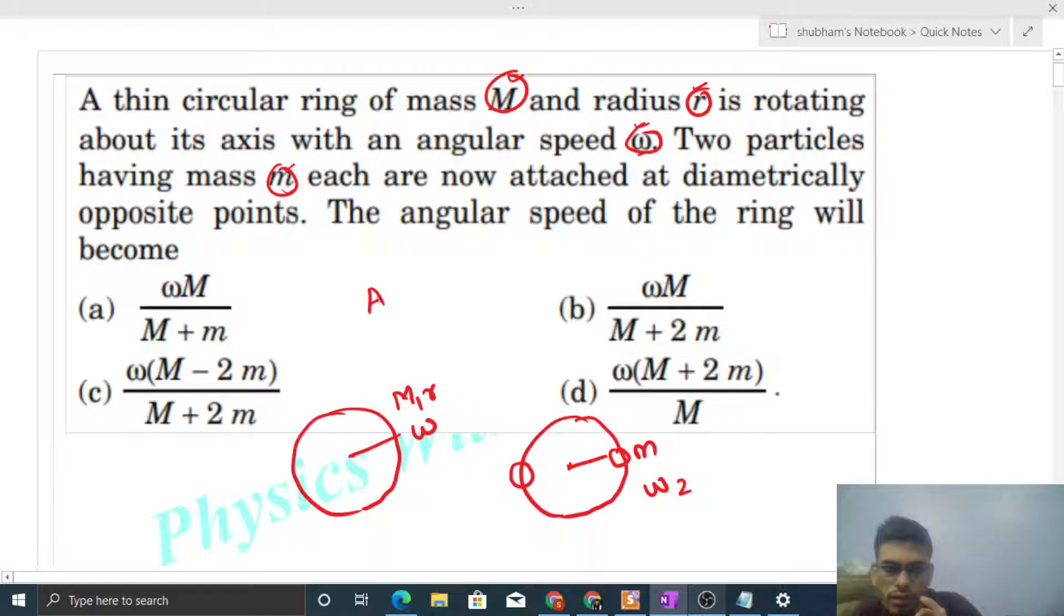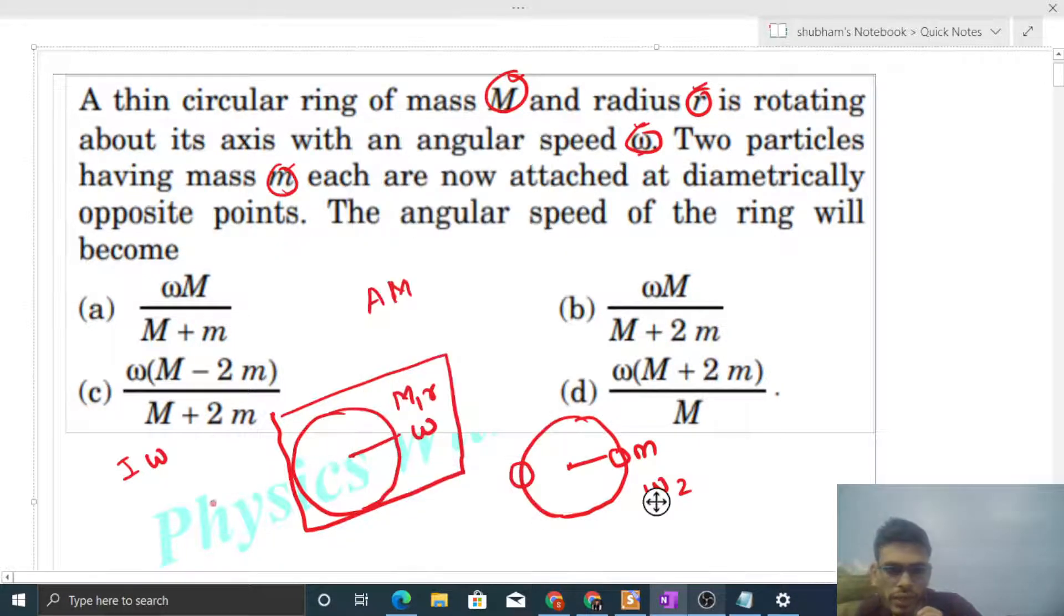So initial angular momentum was I into omega, right? I is initially just a ring. The ring's moment of inertia about its axis of rotation, that is the center, so initial I will be simply M r squared into omega. That will be your final angular momentum.